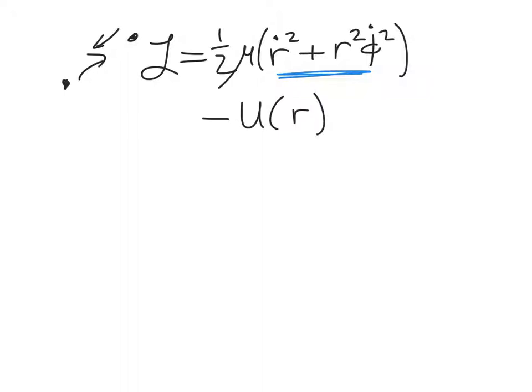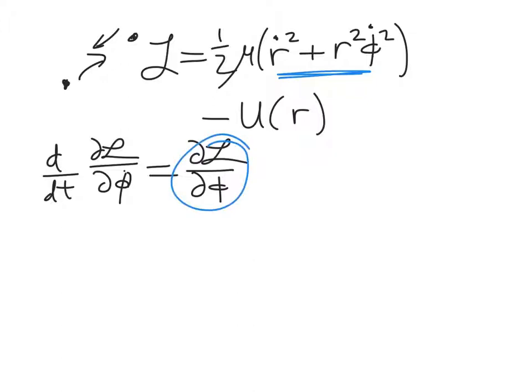And we can apply our Euler-Lagrange equation for the phi coordinate. So our Euler-Lagrange equation, remember, is given by this for phi. And we look at the Lagrangian, and we can see that there is no explicit phi dependence. So that means the right-hand side of this is zero.